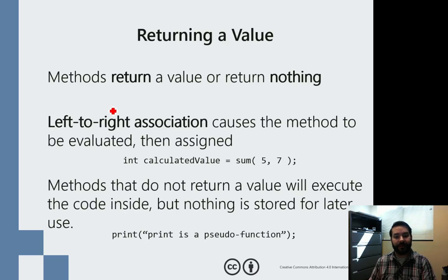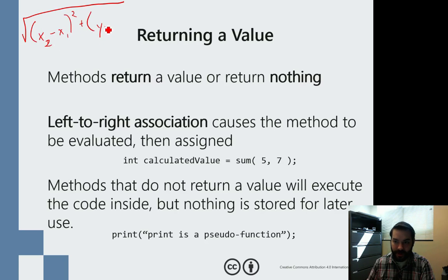Let's think about the distance formula for a second. The distance formula was x2 minus x1 squared plus y2 minus y1 squared. How would I design that out inside of a method?